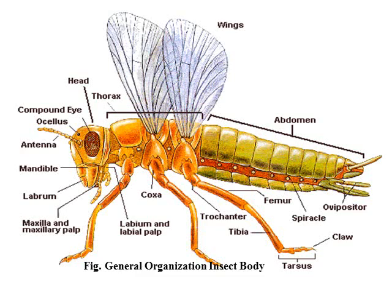The thorax region shows the prothorax, mesothorax, and metathorax, where meso and metathorax collectively bear a pair of wings. Each segment of the thorax has a single pair of legs, making six legs in total. The abdominal region has 11 segments, and at the eighth and ninth abdominal segments there is a genital opening for mating purposes.